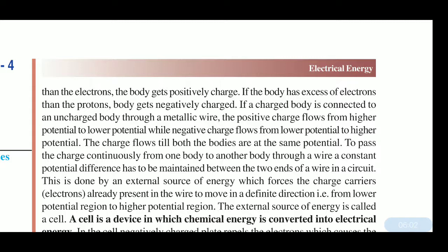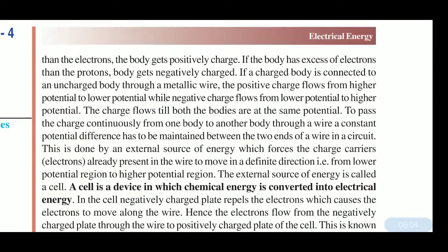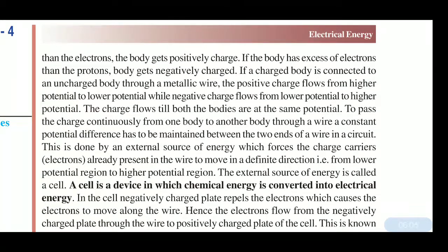If a charged body is connected to an uncharged body through a metallic wire, and if that body has excess of electrons, the body gets negatively charged. The positive charge flows from higher potential to lower potential, while negative charge flows from lower potential to higher potential. The charge flows until both bodies are at the same potential.